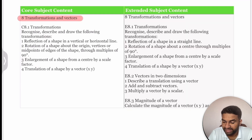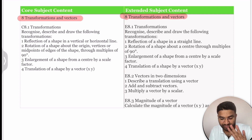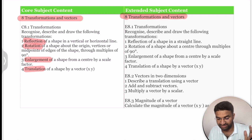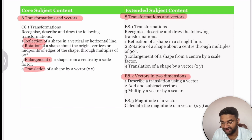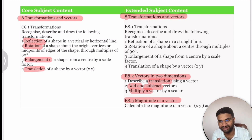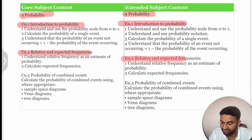Under Transformation and Vectors, the four important transformations — reflection, rotation, enlargement, and translation — are common for all students. Extended students additionally cover vector-related concepts including addition, subtraction, multiplication, and magnitude of vectors.